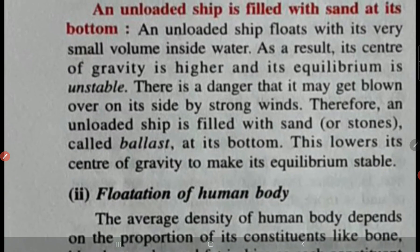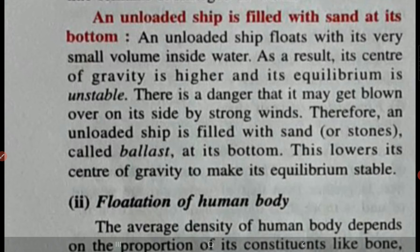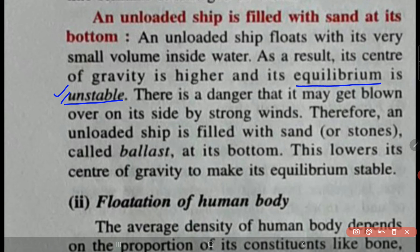An unloaded ship is filled with sand at its bottom. The reason is that it might become unstable when it reaches water of higher density. An unloaded ship floats with very small volume inside water; as a result its center of gravity is at a higher place and its equilibrium is unstable. There is a danger that it may get blown over on its side by strong winds. Therefore, an unloaded ship is filled with sand or stones — called ballast — at its bottom. This lowers its center of gravity to make sure that it is in stable equilibrium and does not overturn.